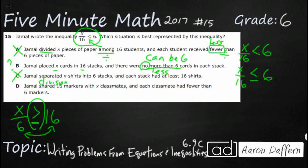Finally, Jamal shared 16 markers with x classmates. See, now we're flipping this — we've got 16 as our numerator, that's how many we're starting with, and we're dividing among x classmates. So we've flipped that. And each classmate had fewer than 6, so we're going to have less than 6 — we have the less than, but we don't have the equal to, it doesn't say we can have 6. And obviously the 16 and x are in the wrong positions, so that is incorrect. Our answer is going to be B.